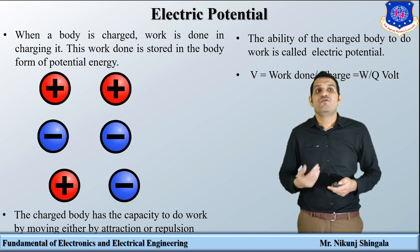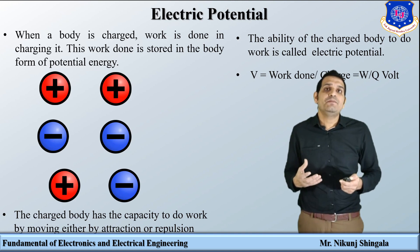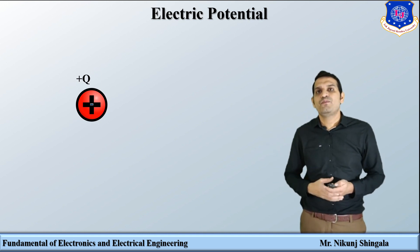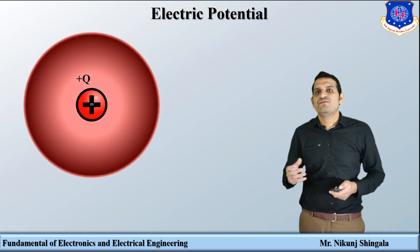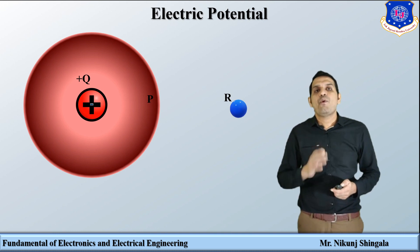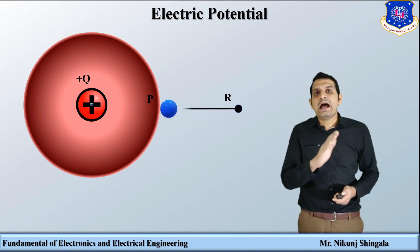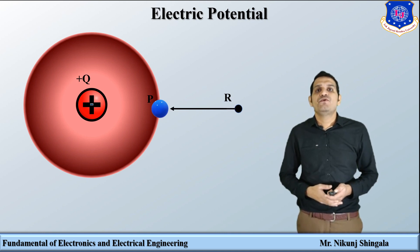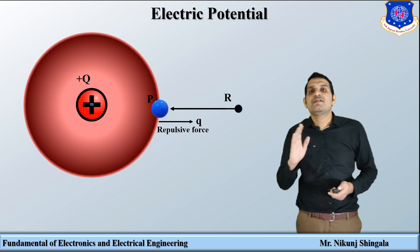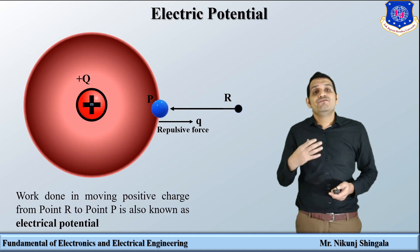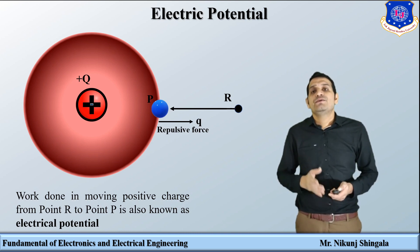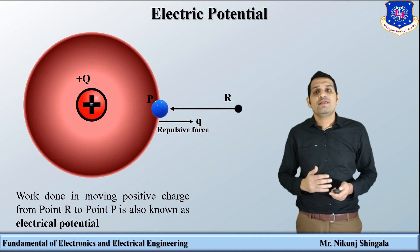Electric potential can be defined as work done per unit charge: W/Q. The unit used for electric potential is volt. To further understand electric potential, consider one positive charge Q placed with its electric field. Another positive charge is at an infinite distance at point R and is moved to point P. Since both are positive charges, there is a repulsive force. Work is done in moving this test charge from point R to point P against the repulsive force, and that work done in moving the positive charge from R to P is also known as electric potential.